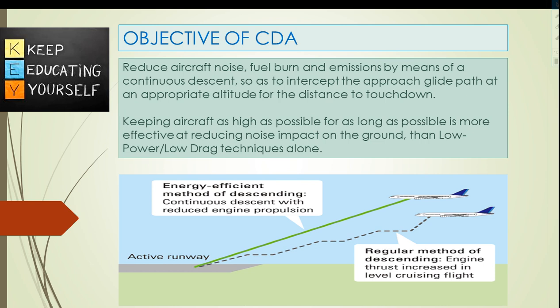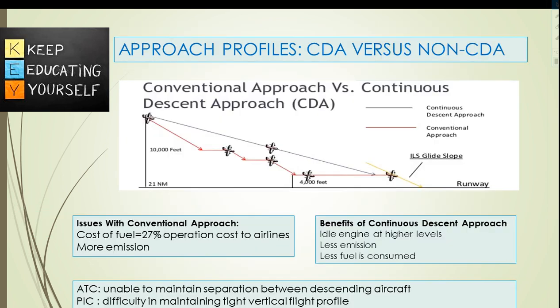The CDA procedure follows a fixed assigned flight path angle, with the aircraft continuously descending toward the runway threshold with near-idle thrust. The approach profiles of CDA versus non-CDA are shown on a single graph. Issues with conventional approach include more CO2 emissions, noise, and high cost of fuel, which is a major contributory factor to the cost of operations to airlines, almost equaling 27 percent of operational costs.